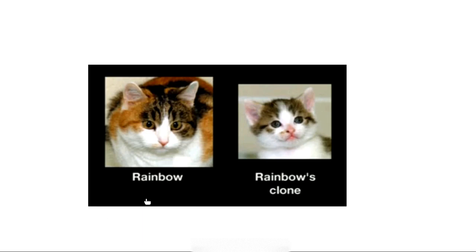A cat named Rainbow was cloned for her unique color pattern, and her clone — CC, for Carbon Copy — had absolutely identical DNA but a completely different coat pattern and color. This brings up epigenetics: it shows that environmental factors, all the way back to the intrauterine stage, affect how DNA is expressed. There's even evidence that trauma or stress in your environment could change the way your DNA is expressed, and this is called epigenetics.